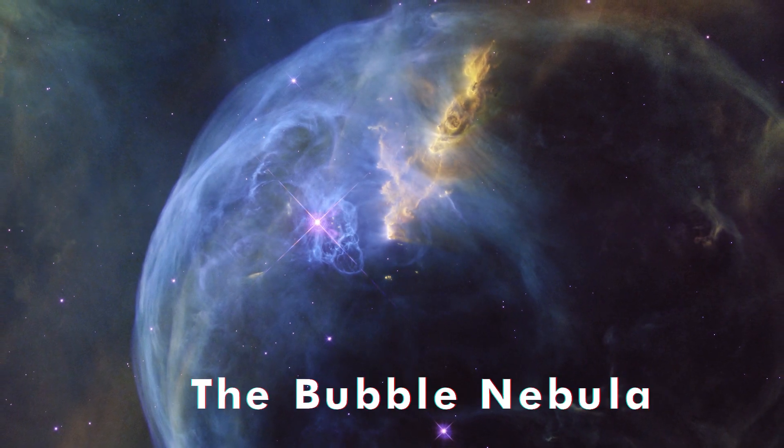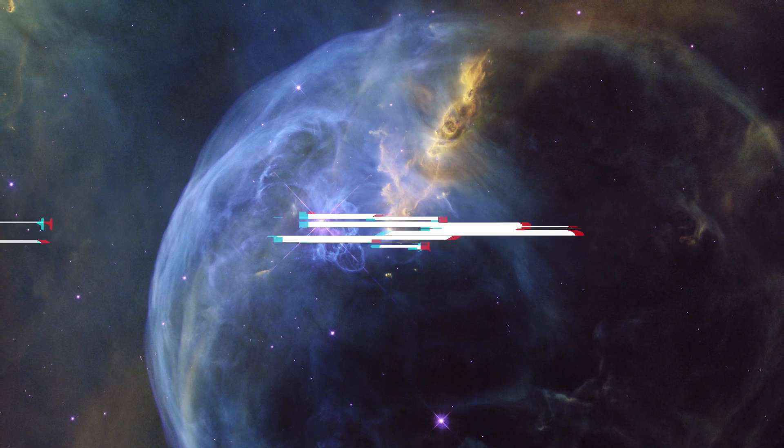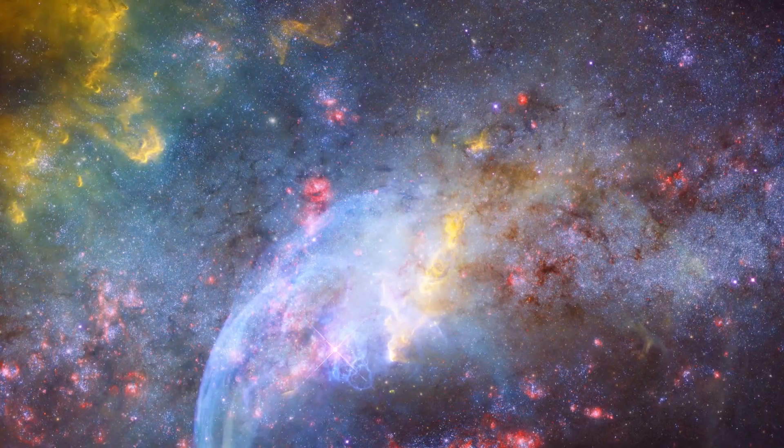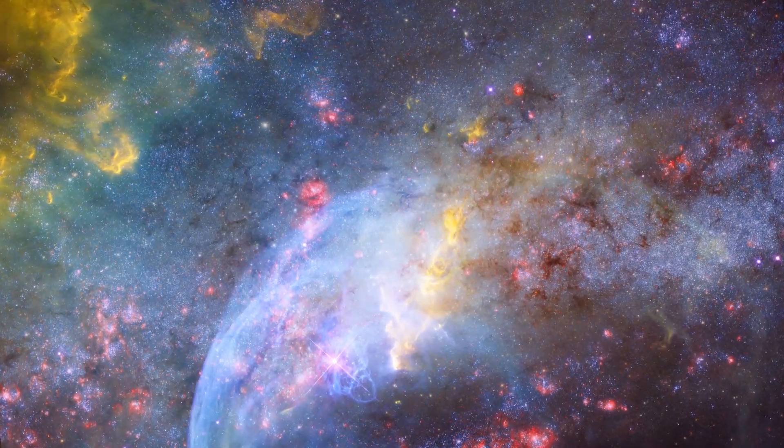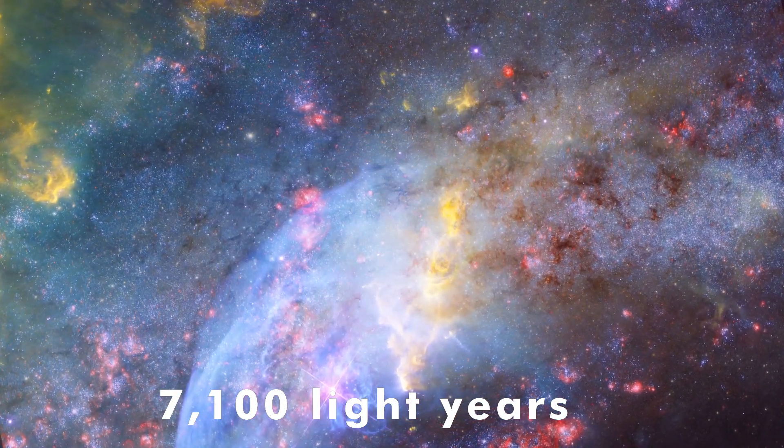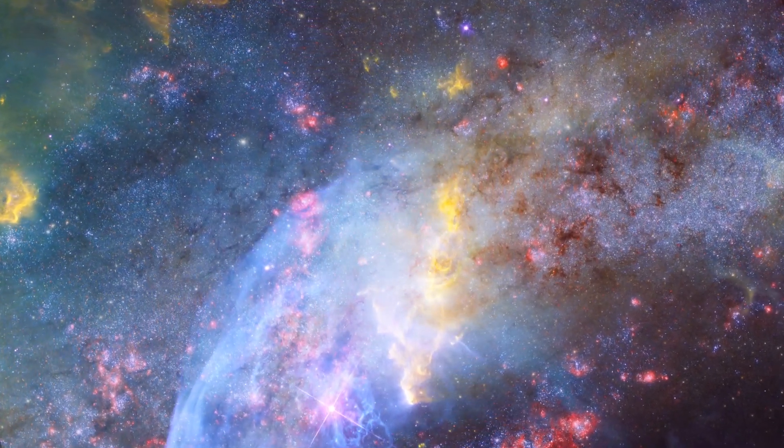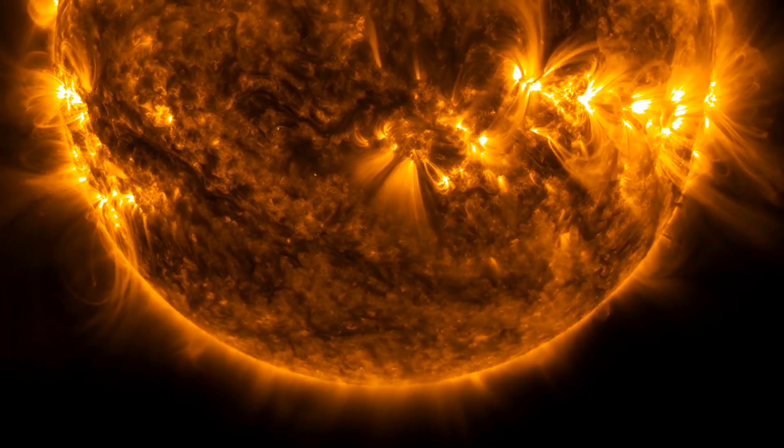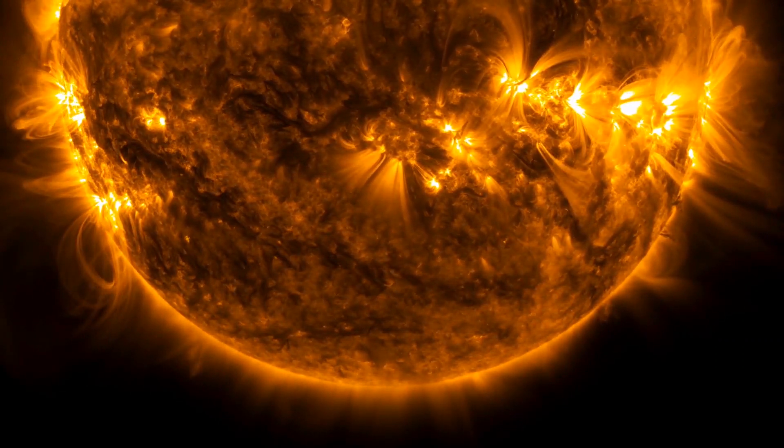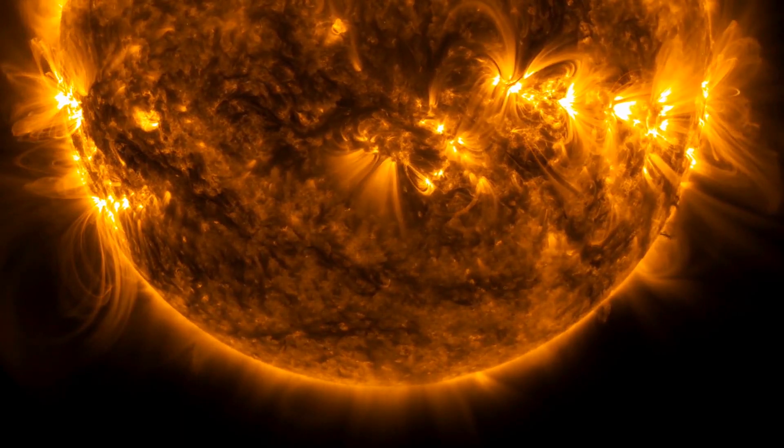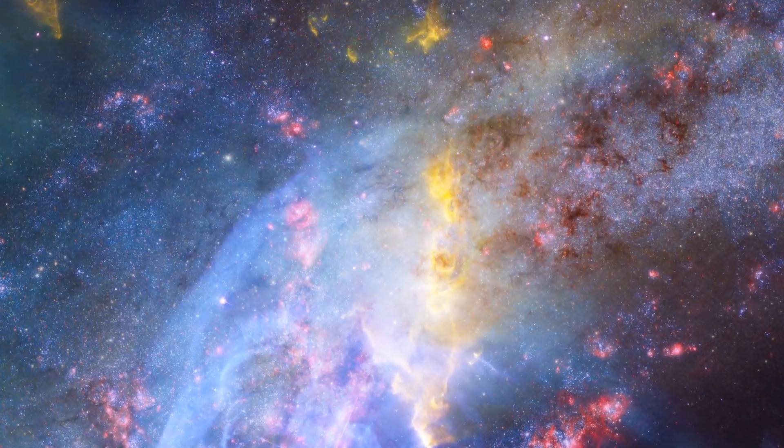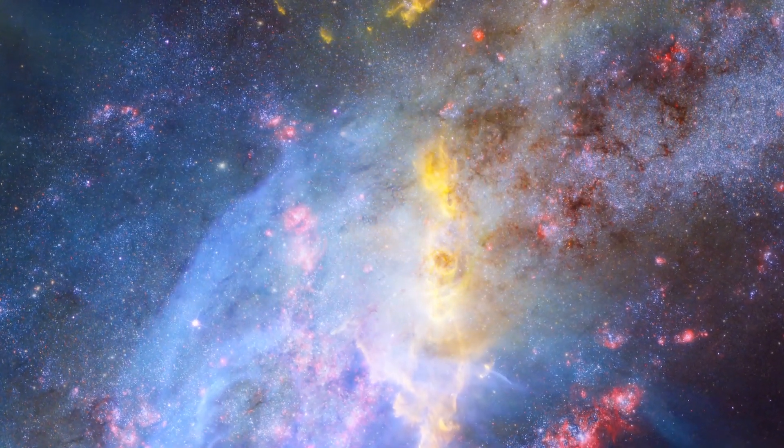The Bubble Nebula is 7 light years across, about one and a half times the distance from our Sun to its nearest stellar neighbor, Alpha Centauri, and resides 7,100 light years from Earth in the constellation Cassiopeia. The seething star forming this nebula is 45 times more massive than our Sun. Gas on the star gets so hot that it escapes away into space as a stellar wind, moving at over 4 million miles per hour.